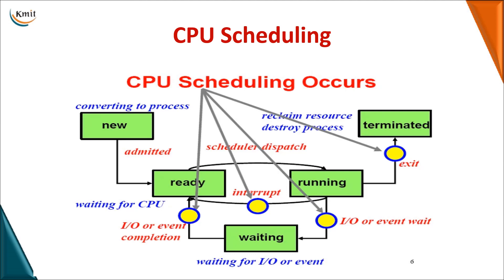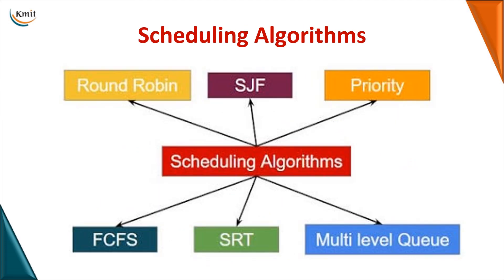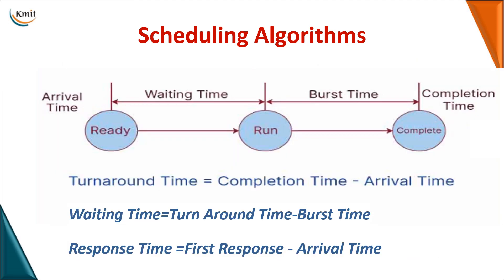CPU scheduling occurs in the following cases: when a particular process has terminated, when a process moves from running state to ready state due to an interrupt or a higher-priority process, when a running process requires I/O devices, or when a process moves from waiting state to ready state after an event has occurred. In CPU scheduling we use various algorithms: Round Robin, Shortest Job First, Priority, FCFS, Shortest Remaining Time, and Multi-level Queue Scheduling.